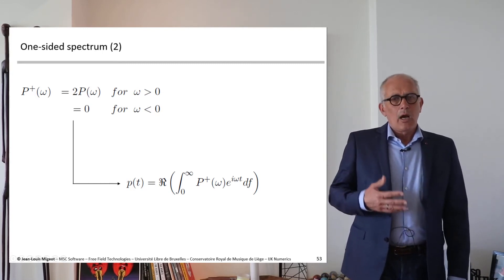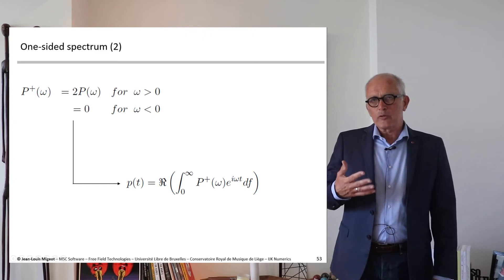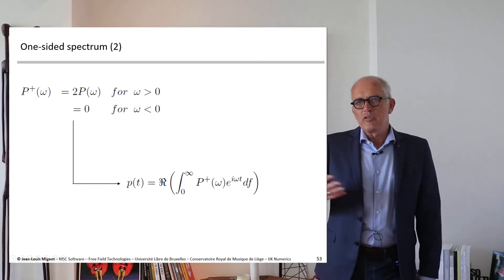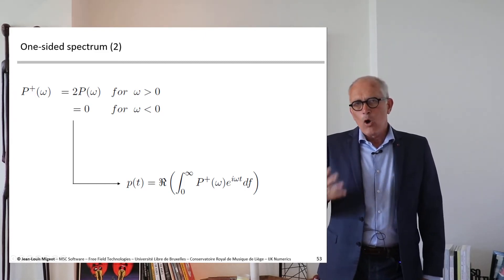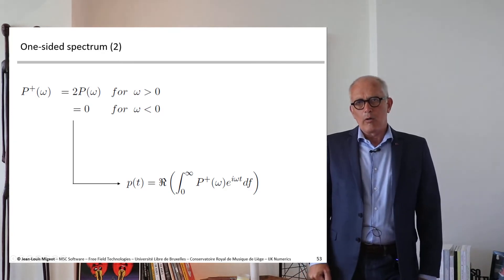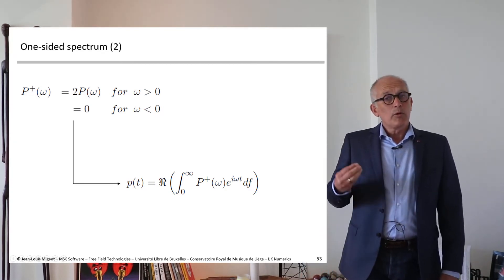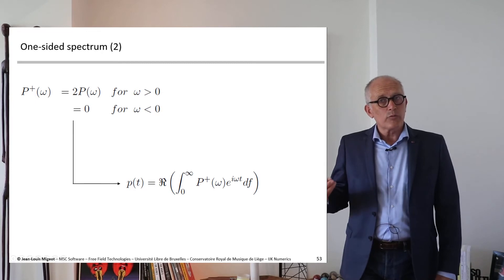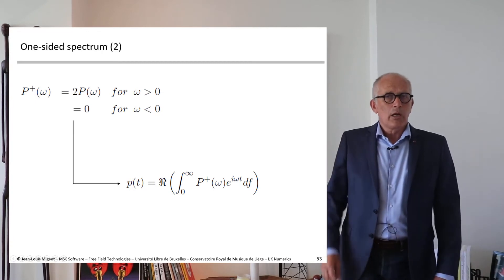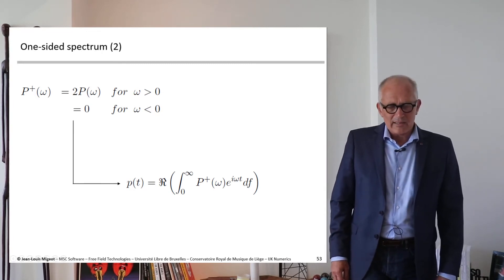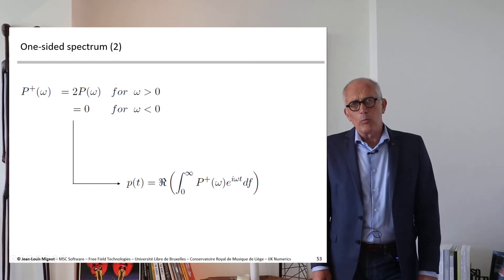And so that leads us to the definition of the spectrum that I denote here P plus, which is a spectrum which has only values between zero and infinity. All the values for negative frequencies are zero, but its value for positive frequencies is just double the value that it has in the normal definition of the spectrum.